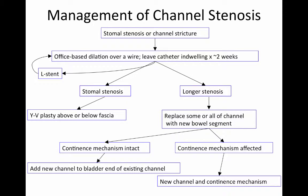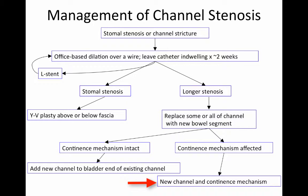When thinking about the benefits of preserving part of the channel, it's particularly helpful if the continent end — the end towards the bladder — can be preserved. Then we do not have to make a new continence mechanism and can simply add a new terminal end to the channel and mature that up to the umbilicus. But if the continence mechanism is affected by the stenosis, we'll likely have to remove all of the channel and create a new channel with a new continence mechanism.